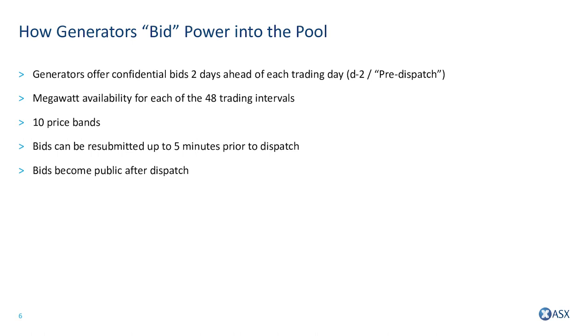The NEM rules allow generators to change their mind on volumes in each price band up to five minutes prior to dispatch if they have a material reason to do so. Finally, one of the main drivers of prices in the Australian electricity market is extreme weather events.